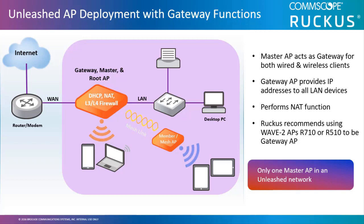When configuring the master Unleashed AP as a gateway, the AP is going to be sitting in between the LAN and WAN connection. It will act as a gateway for both the wired and wireless clients. All the traffic will go through this AP, and the AP will do the DHCP server function as well as NAT and other master functions.